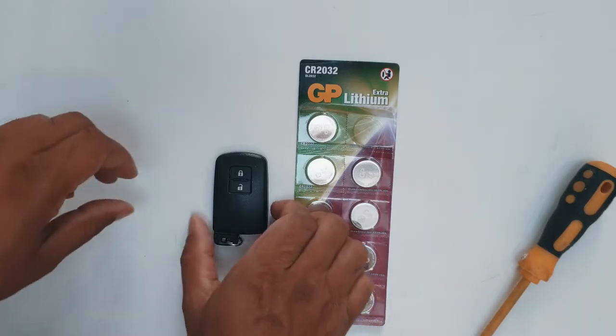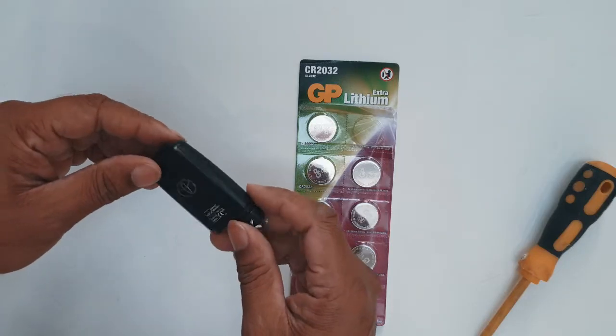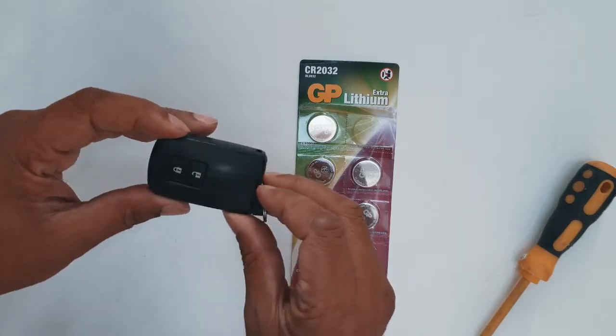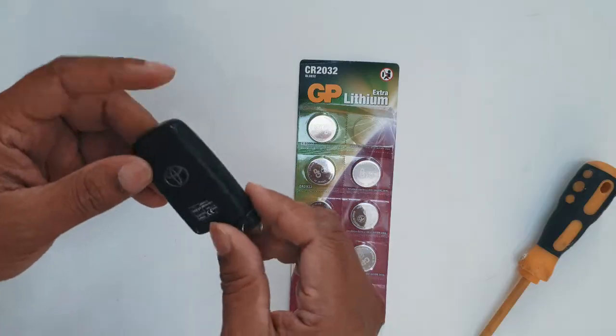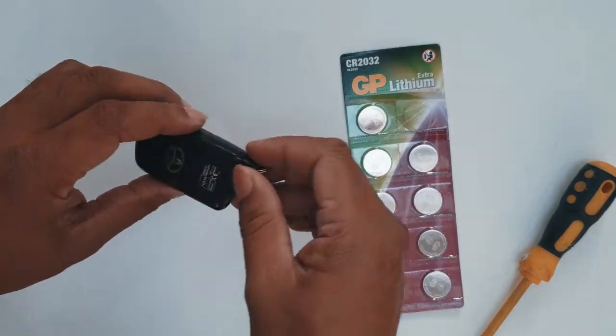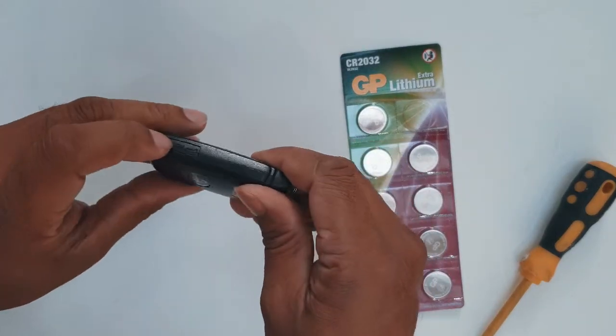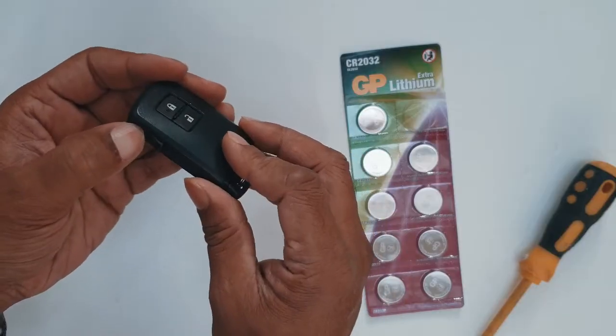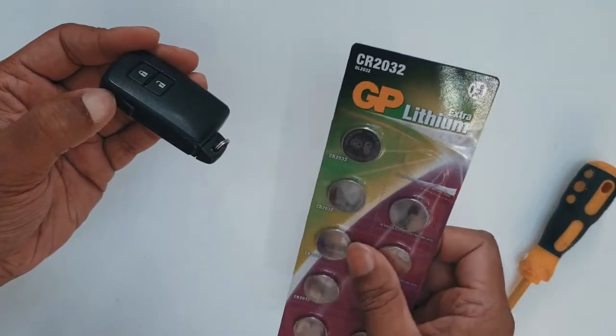Alright, this is the quick way to change your Toyota Auris battery. First, we're going to think about how to open it. It's a simple process that takes just a few minutes to change the battery, as long as you've got the right type.